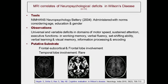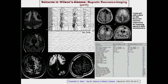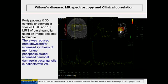MRI also helps in correlating with neuropsychology. Sometimes with the kind of changes we see, patients invariably have seizures — sometimes very difficult to control. Seizures happen in about 6–7% of patients with Wilson's disease. We also looked into spectroscopic findings — MRS — where we generally find a decrease of choline and creatinine compared to NAA.